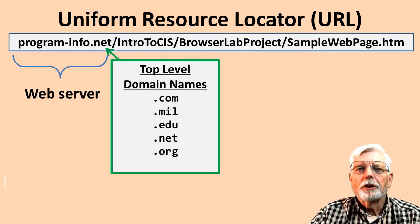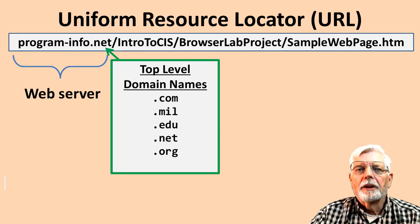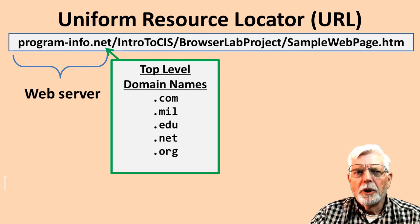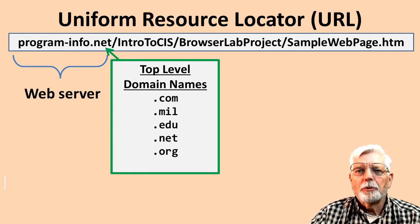The original top-level domain names were .com, .mil, .edu, .net, and .org. The top-level domain helps identify the type of web server. Recently, additional names have been added to the list, such as .biz, .travel, etc.